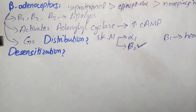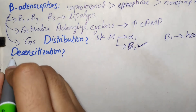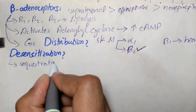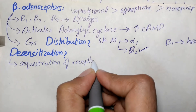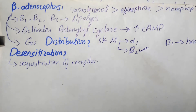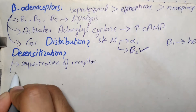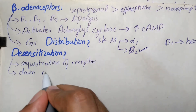Desensitization can occur by three mechanisms. The first is sequestration of receptors, making them unavailable for interaction with the ligand. When there is no availability of the receptor, there will be no interaction, and thus no response.